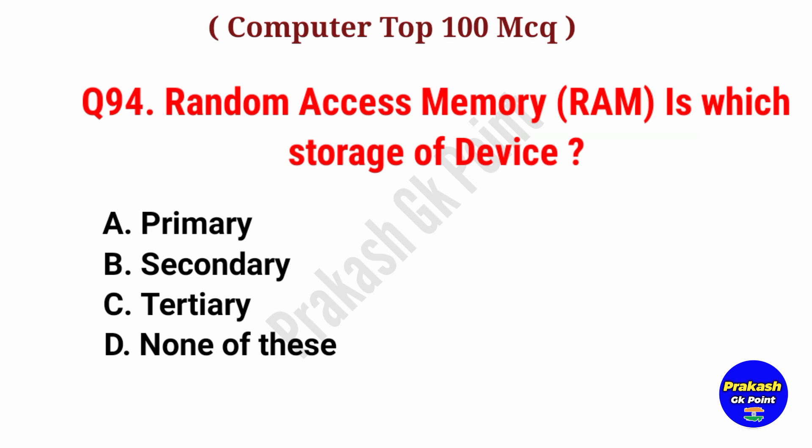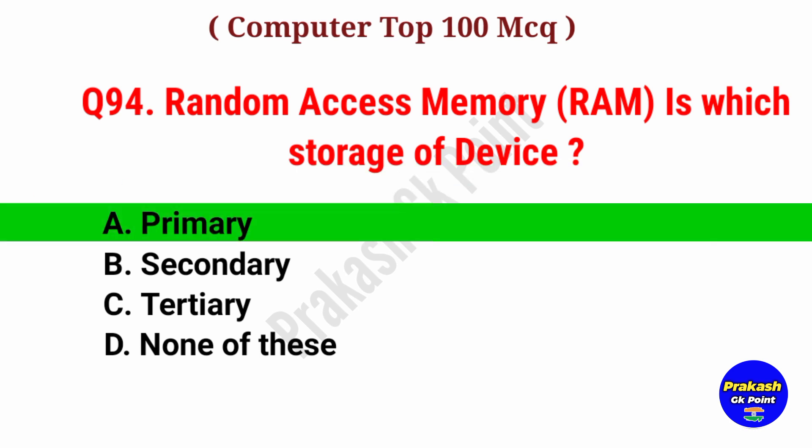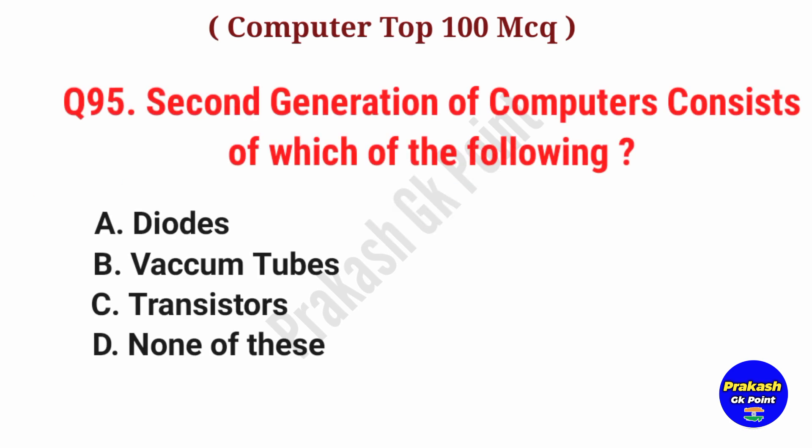Random Access Memory (RAM) is which type of storage device? Answer: Option A, Primary Storage.